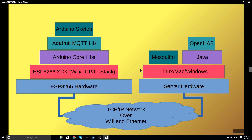Mosquitto also has a connection open all the way over to the Arduino. Starting at the top, the Arduino sketch invokes the broker connection routine inside the Adafruit MQTT library. There are other libraries besides the Adafruit MQTT library — this is the first one I've used and it seems fine; it may be missing some features, but for what I've been doing it's been just fine. The Adafruit MQTT library invokes the Arduino core libraries, which have been integrated with the ESP8266 SDK, which ultimately sends messages to the CPU registers on the hardware, which energizes the antenna and sends out a WiFi message, forming the connection to the Mosquitto broker.